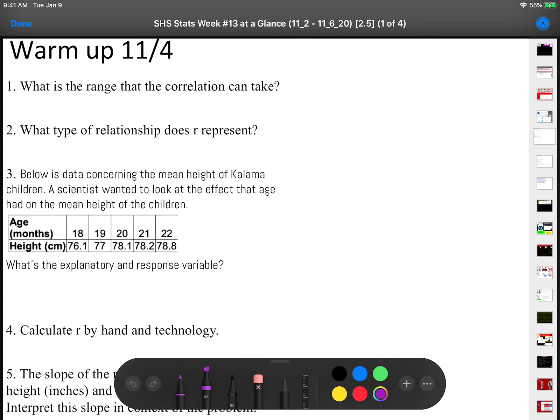Alright, let's go over this warm-up. What is the range of correlation? Remember, correlation has to stay between a number that's between negative 1 and 1. The numbers can never go further than negative 1. You can't have something like negative 1.25, and you can't have something like 2.8. It has to be between negative 1 and 1.